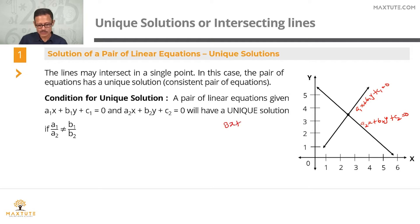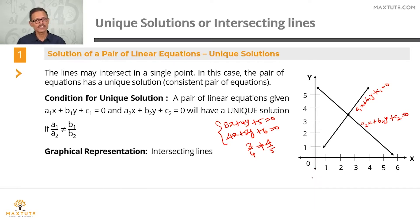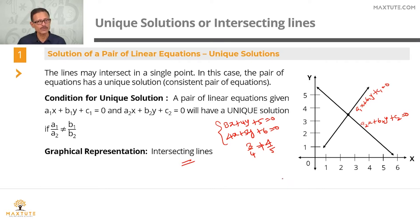For example, take 3x plus 4y plus 5 equals 0 and 4x plus 5y plus 6 equals 0. Here a1 by a2 is 3 upon 4, and b1 by b2 is 4 upon 5. Since 3 upon 4 is not equal to 4 upon 5, this pair has a unique solution. They represent a pair of intersecting lines — a consistent system.